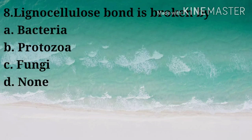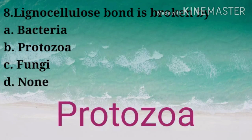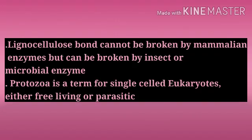Question: The lignocellulose bond is broken by — Options: A) Bacteria, B) Protozoa, C) Fungi, D) None. Correct answer: Option B — Protozoa. The lignocellulose bond cannot be broken by mammalian enzymes but can be broken by insect or microbial enzymes. Protozoa are single-celled eukaryotes, either free-living or parasitic.